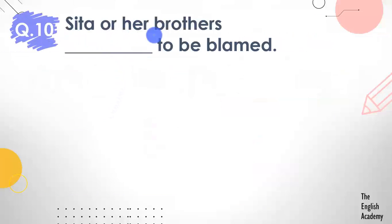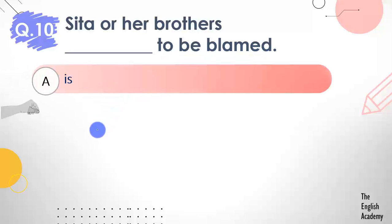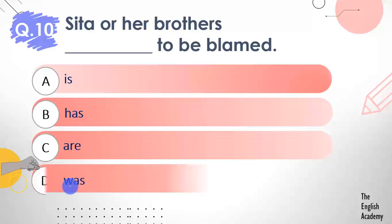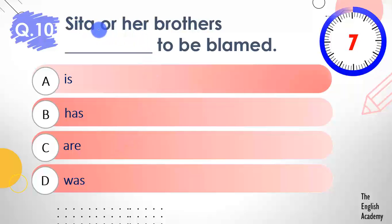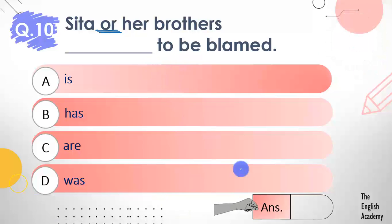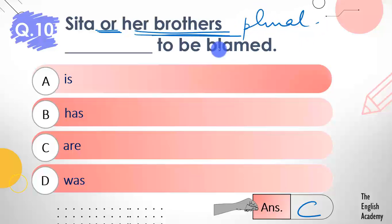Question number 10: Sita or her brothers ___ to be blamed. Options: A) is, B) has, C) are, D) was. When two subjects are joined by 'or', the verb agrees with the subject closest to it. The answer is option C — are. Here the second subject 'her brothers' is closer to the verb and it is plural, so the plural verb 'are' is used.